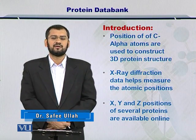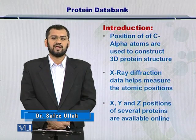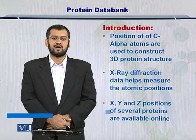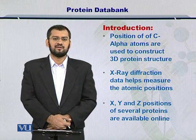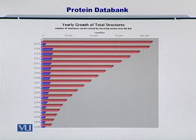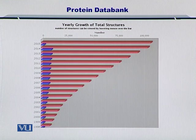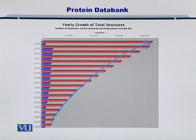The Protein Data Bank contains information on the X, Y, and Z coordinates of different alpha carbons within a large variety of proteins. Every year, more and more people are submitting their experimental results to the Protein Data Bank. As you can see from this graph, by 2015 there were nearly 100,000 submissions. These represent the yearly and cumulative growth of protein structures in the Data Bank.